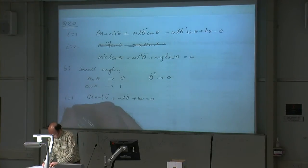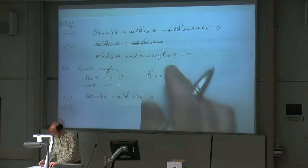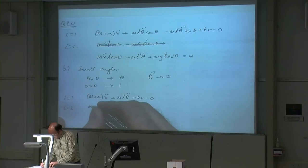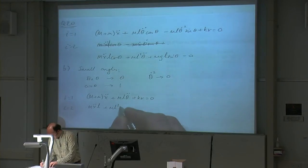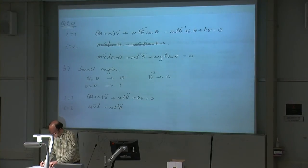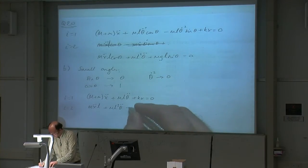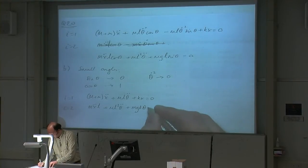For i equals 2, you can do the same thing, apply the small angle approximation. We've got cos(θ), so that's 1, so we've just got mẌL. Here we've got +ML²θ̈. And here we've got sin(θ), which equals θ, so we've got +MGLθ = 0.